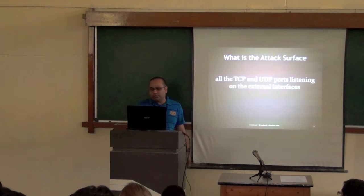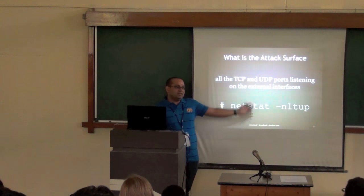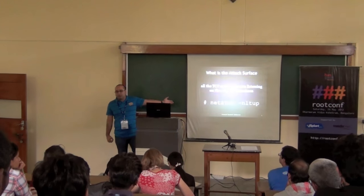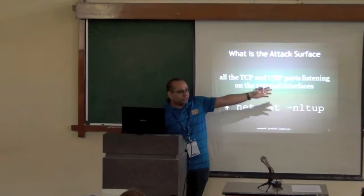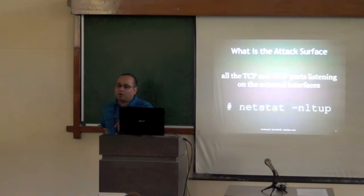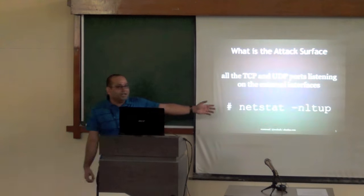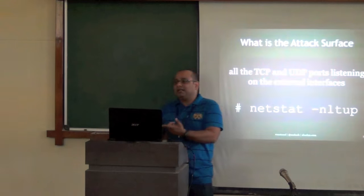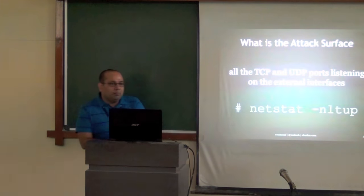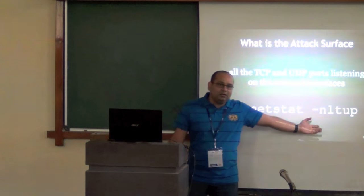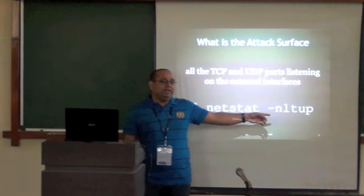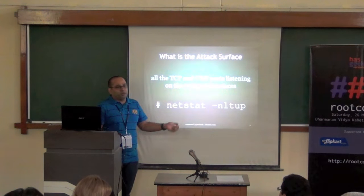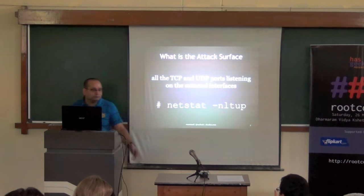How would you do that? The first thing is to find out what is visible. This is the command — you need to be root. Run: netstat -nltup. N means do not resolve — it gives you the exact IP, not the hostname, and port number rather than service name. L is for listening, T for TCP, U for UDP, and P shows which process spawned that port, so you can identify and kill it if needed.